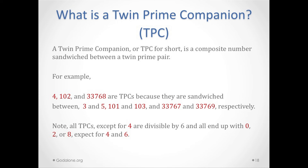For example, 4, 12, 18, 30, 42, 60, 72, and 3768 are TPCs because they are sandwiched between twin prime pairs such as 3 and 5, 11 and 13, and 3767 and 3769, respectively. Note that all TPCs except for 4 are divisible by 6, and they all end in either 0, 2, or 8 — except for 4 and 6.